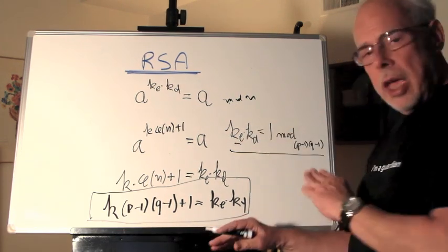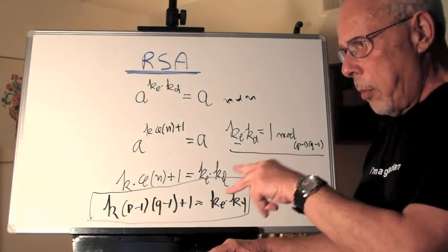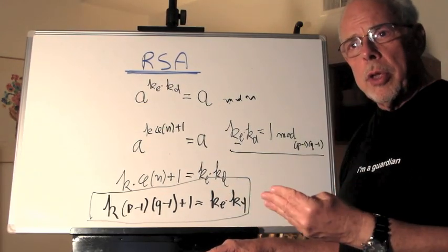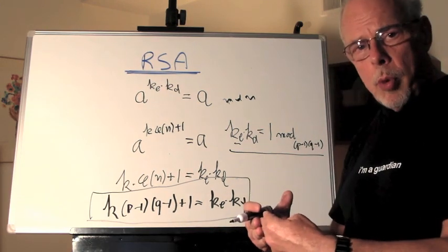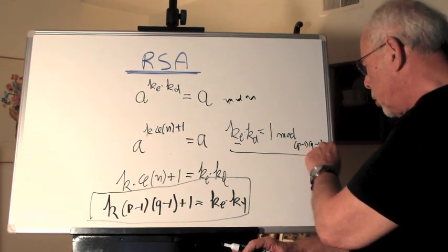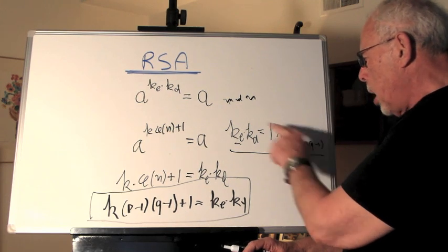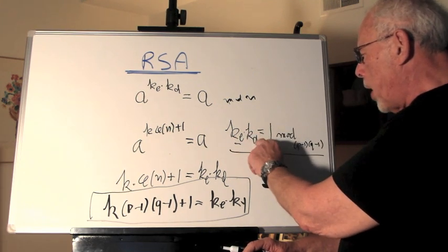And if we have KE, to find KD, it's easy. We see in the math section, we have something called the extended Euclid algorithm that gives us a step-by-step way, if we know P, we know Q, so we know this number, and we know KE to find KD.